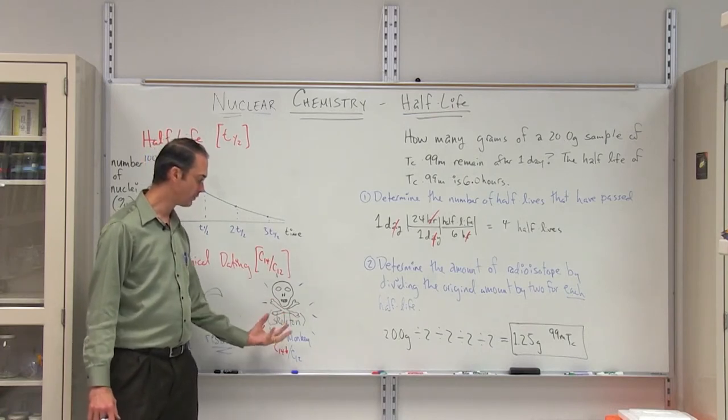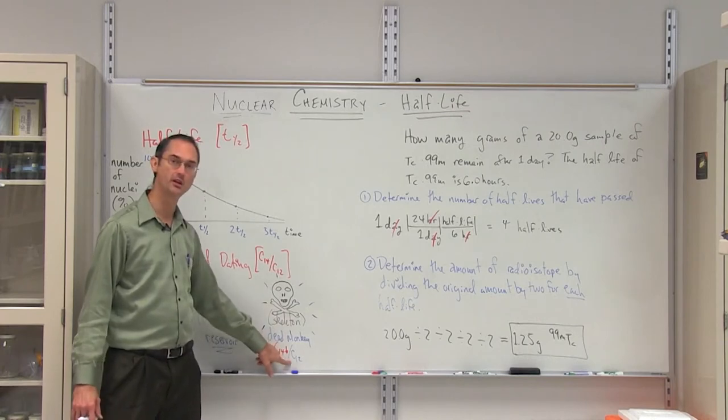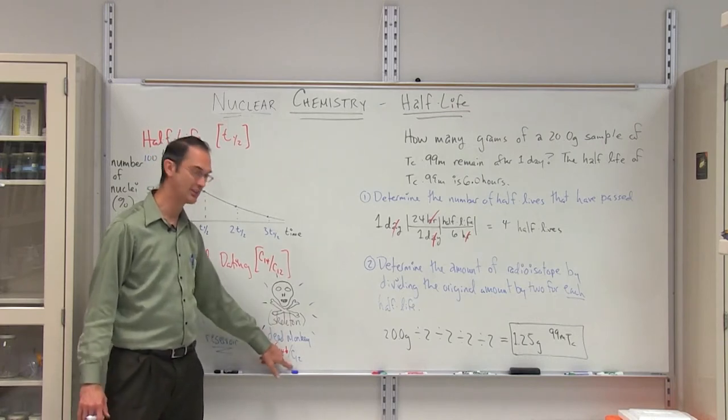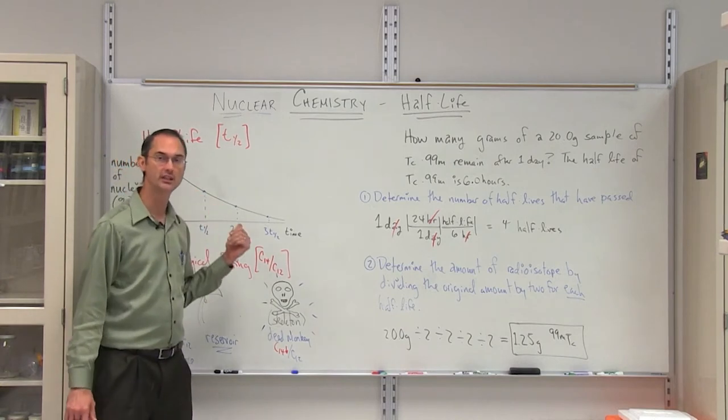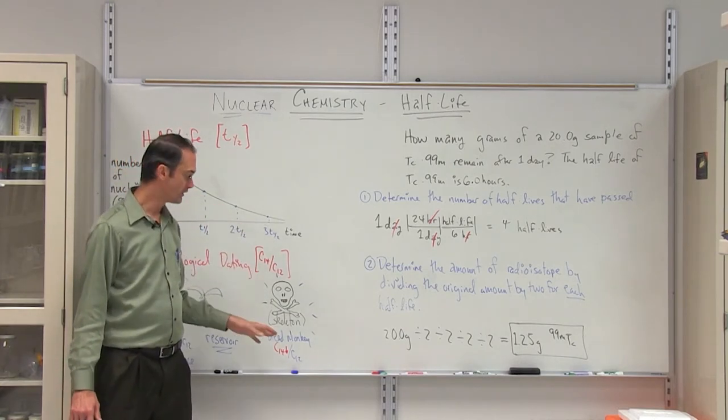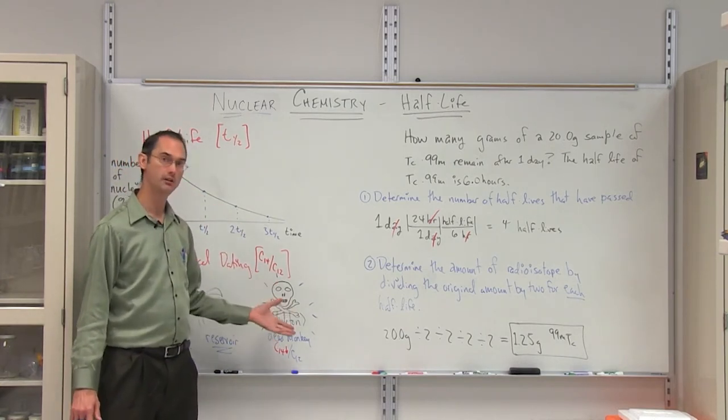And as a result, the dead monkey will contain much less C14 than C12. By taking a look at the C14-C12 ratio and knowing the half-life of C14, which is a few million years, you can then determine the age of the monkey's remains.